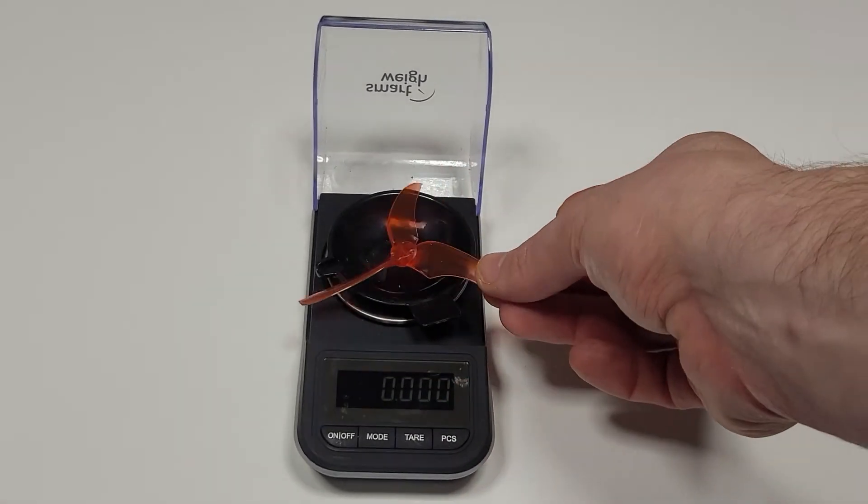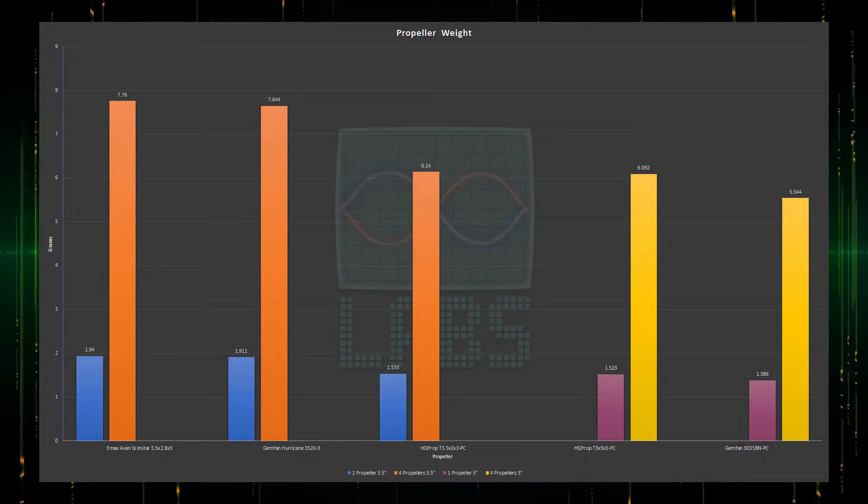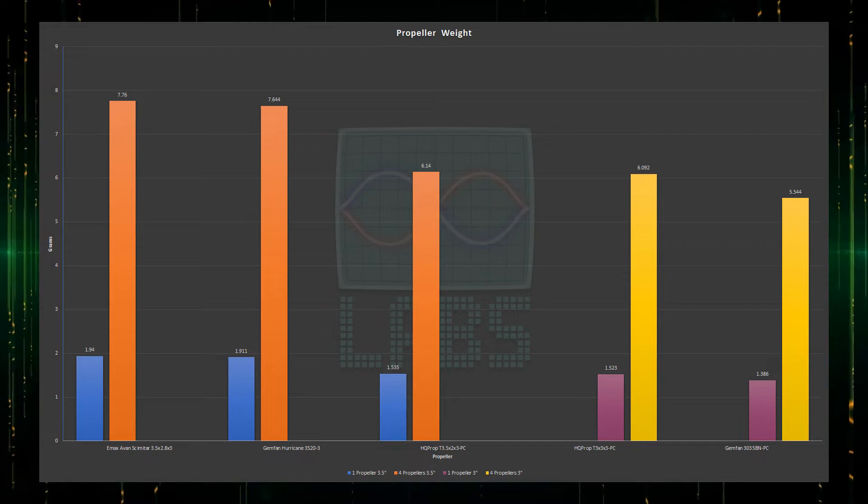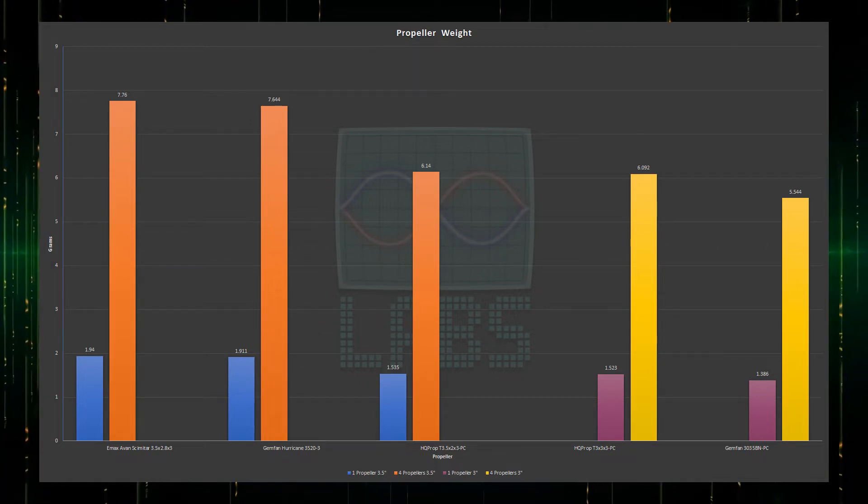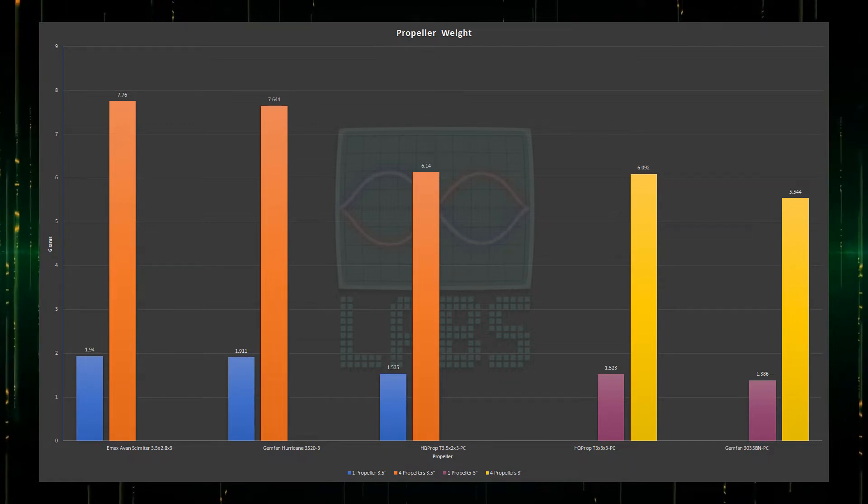Now for the weigh-in. I weighed these propellers using my Calibrated Jewelry Scale, accurate to 0.01 grams. The Emax and Gemfan 3.5-inch propellers come at a fairly similar weight, but the HQ Prop 3.5-inch is only 0.012 grams heavier, comparing all 4 propellers against aggressive 3-inch propellers. This gives me hope that this might work out, so I'm fairly excited to get started and see how these compare.